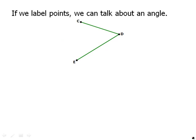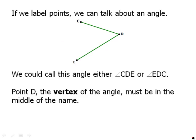If we label points, we can talk about an angle. We could call this angle either CDE or EDC. Point D, the vertex of the angle right here, the point of the angle, must be in the middle of the name. So we can call it either CDE or EDC as long as the vertex is in the middle. Sometimes in these videos, I'll also use a single angle name if there's no ambiguity. For example, there's only one angle in this diagram, so I could call it angle D. Theoretically, that could occur on the test, although the test is often careful enough to use a three-letter name always for an angle.